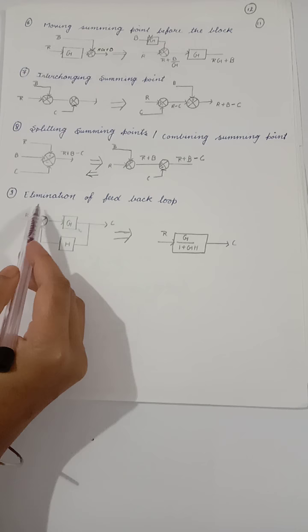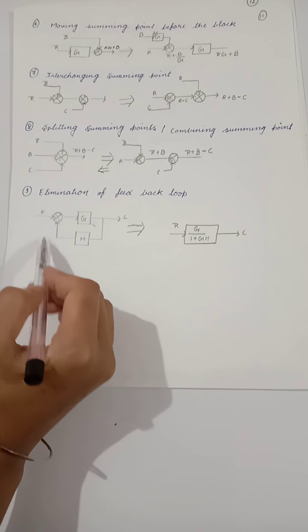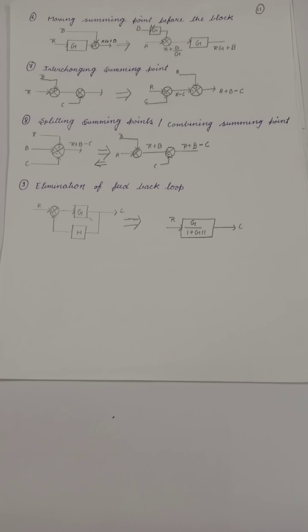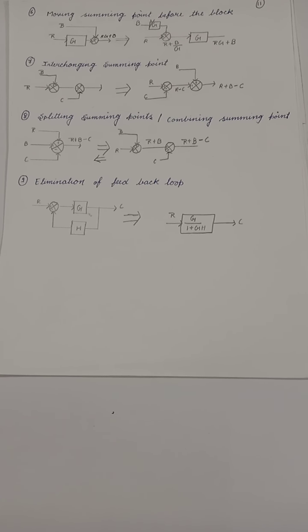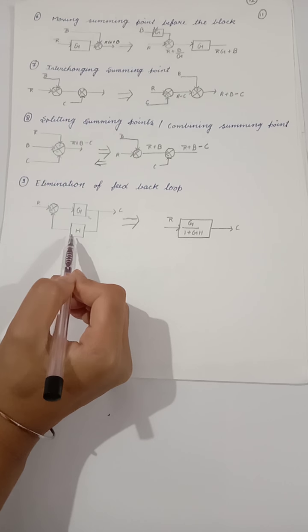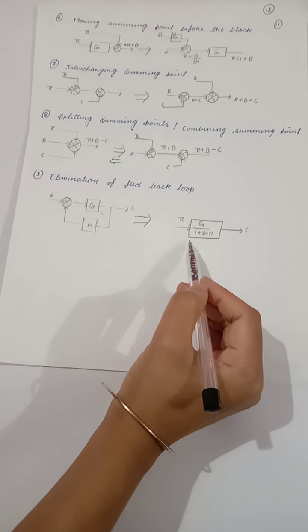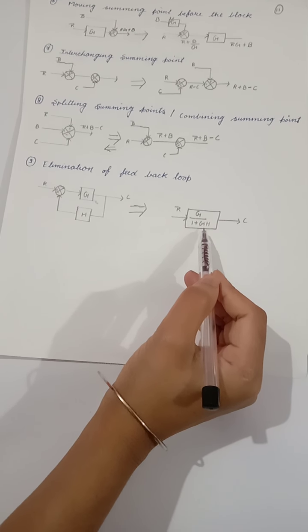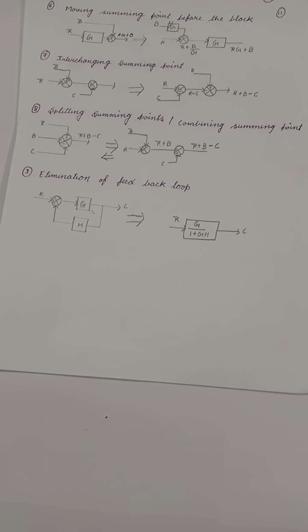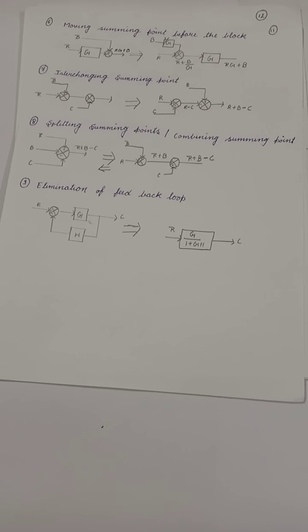The ninth rule is the elimination of the feedback loop. If we have a feedback loop, we can eliminate it. Here G is the open loop gain and H is the feedback path gain. For a negative feedback system, we can reduce it to a single block: G divided by (1 plus G·H). This is the transfer function of negative feedback. These are all the block diagram reduction rules you need to follow. Thank you.